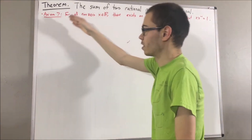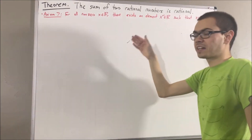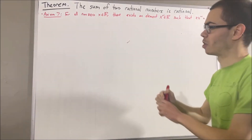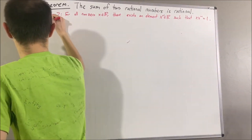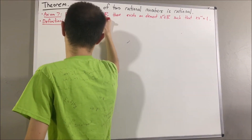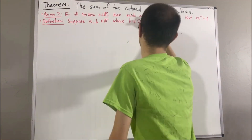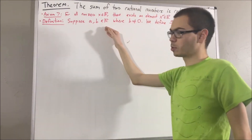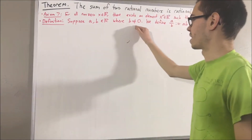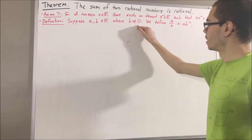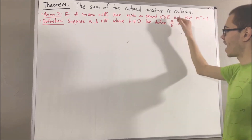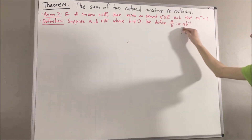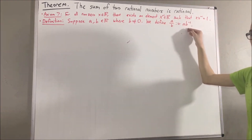Using axiom 7, we have defined the operation of division as follows. Suppose a and b are real numbers where b is non-zero. We define a over b to be a times the reciprocal of b.